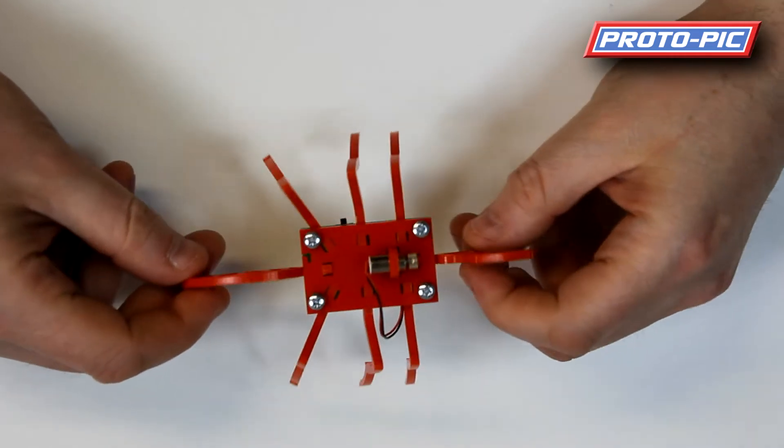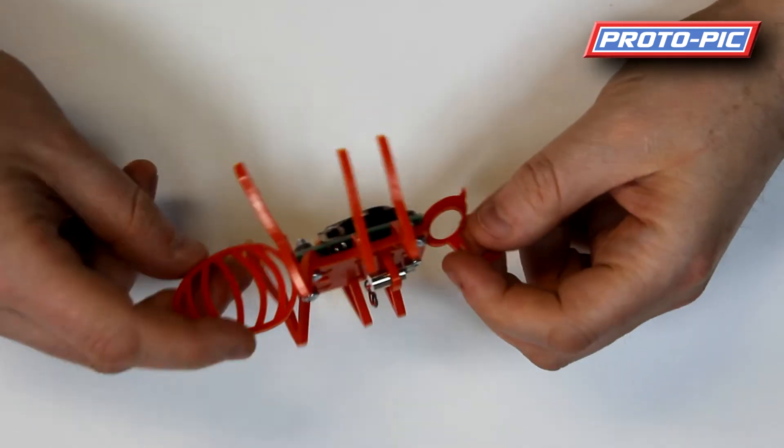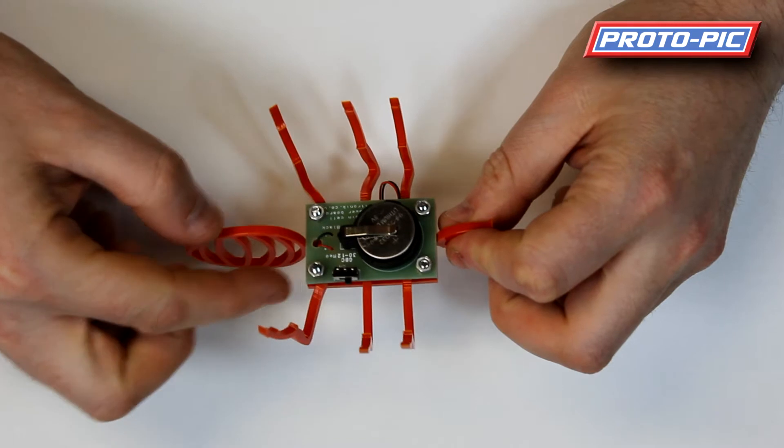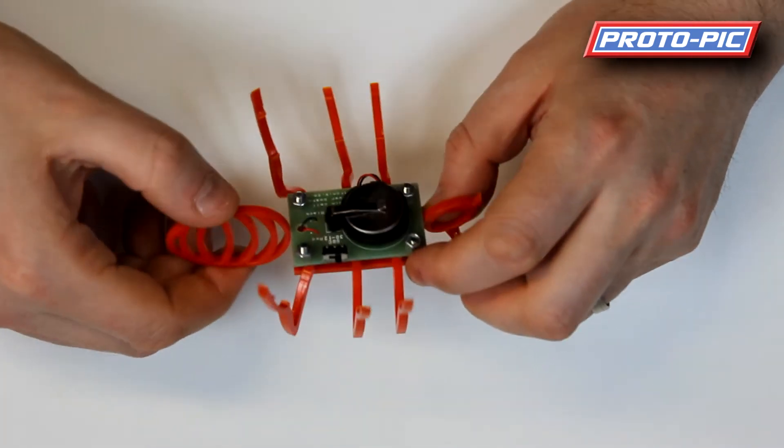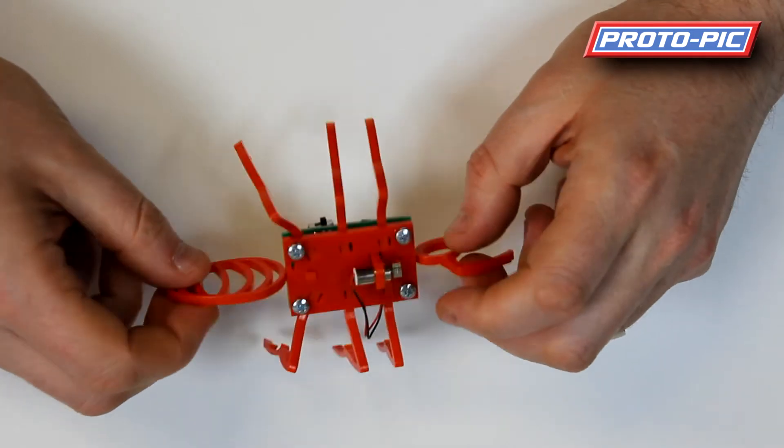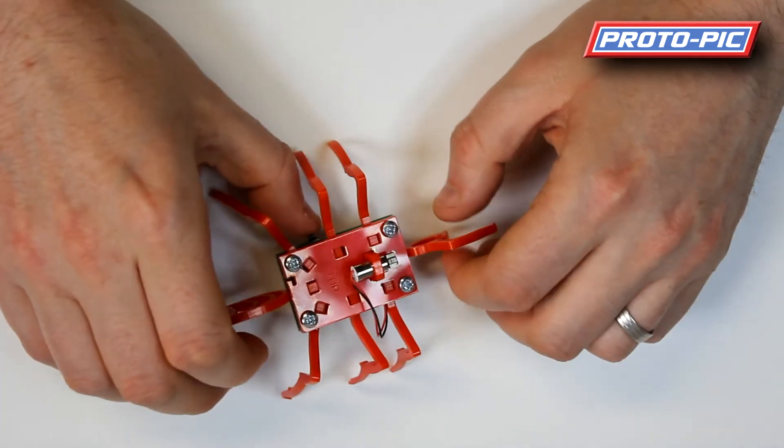It's made from a sheet of acrylic pre-cut and then there's a little PCB board there with a switch on it and a coin cell battery and just four screws and four nuts to hold it down. I'll just switch it on and show you and then I'll show you what you get in the kit.